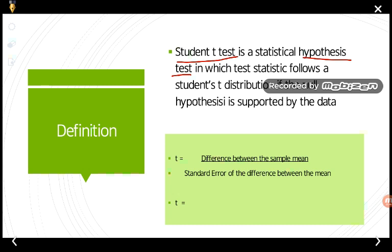How is the t-test calculated? The formula for the t-test is the difference between the given sample means. To calculate the t-test, we write: t is equal to the difference between the sample mean divided by the standard error of the difference between the means. We first find the mean of the two samples and then find the difference.